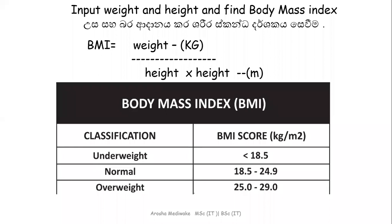Input weight and height and find the Body Mass Index, that is BMI. Then you have to categorize according to the following table: classification underweight — BMI score is less than 18.5; normal — BMI is 18.5 to 24.9.